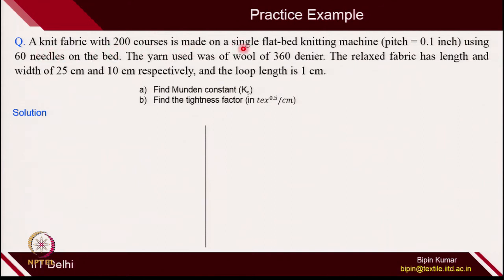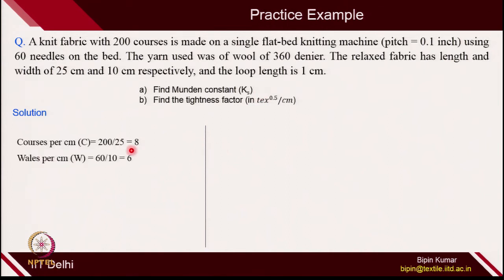Let's do a simple example. A knit fabric with 200 courses is made on a single flatbed machine. The pitch is 0.1 inch using 60 needles on the bed. The yarn used is 40 Tex, and the relaxed fabric length is 25 cm and width is 10 cm. The loop length is given as 1 cm. We need to find the Munden constants and the tightness factor. For Kc we need courses per cm and loop length. Courses per cm = 200/25 = 8. For wales, 60 needles over 10 cm gives 6 wales per cm.